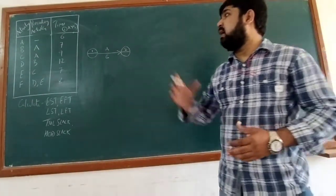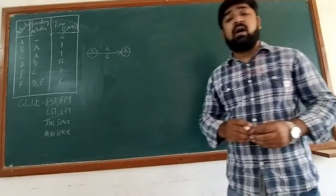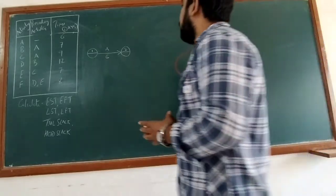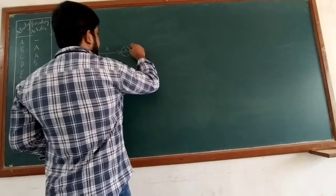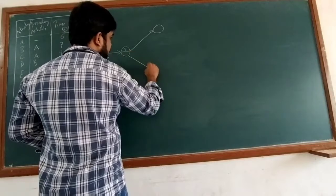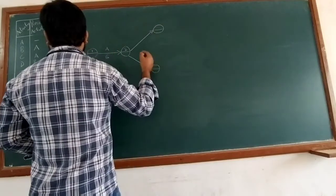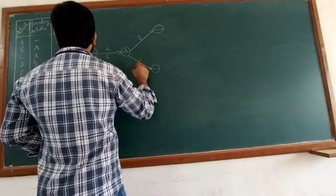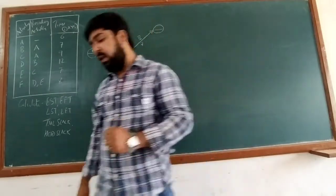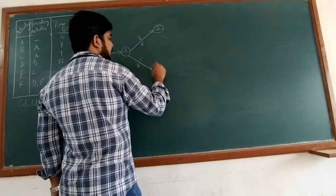The next activities are B and C. Both have a common preceding activity, which is activity A. So we will construct both activities from activity A's ending node. Activity B requires 7 days to complete and activity C requires 9 days to complete. We number their ending nodes as 3 and 4 respectively.